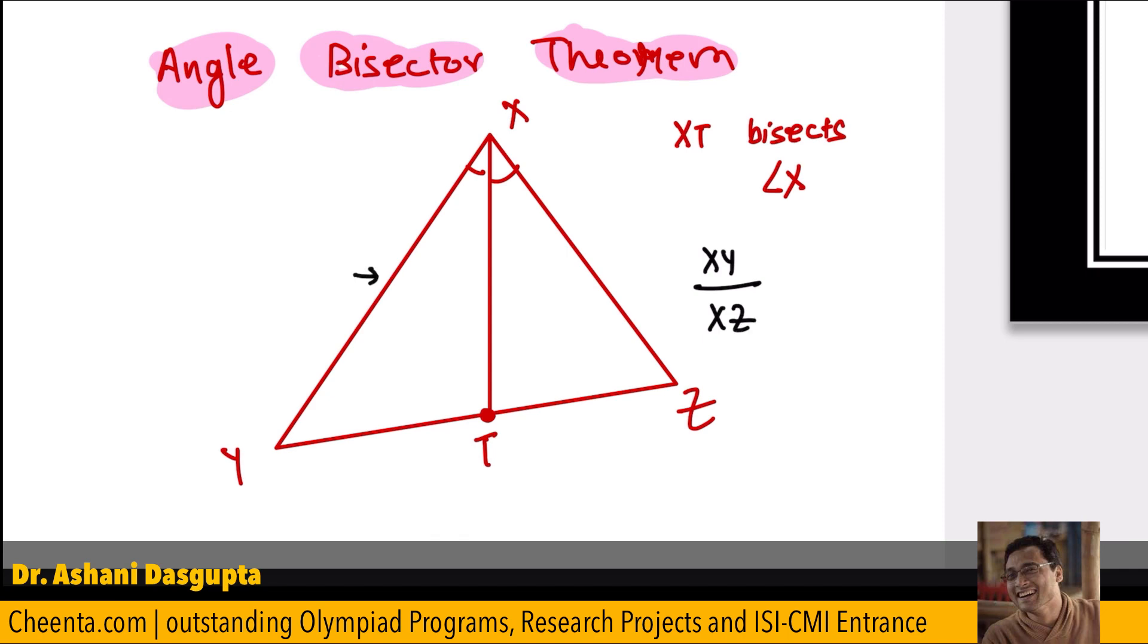these two sides that contains this angle is equal to the ratio of the two pieces of the base. So, YT over ZT. That's what the angle bisector theorem is.